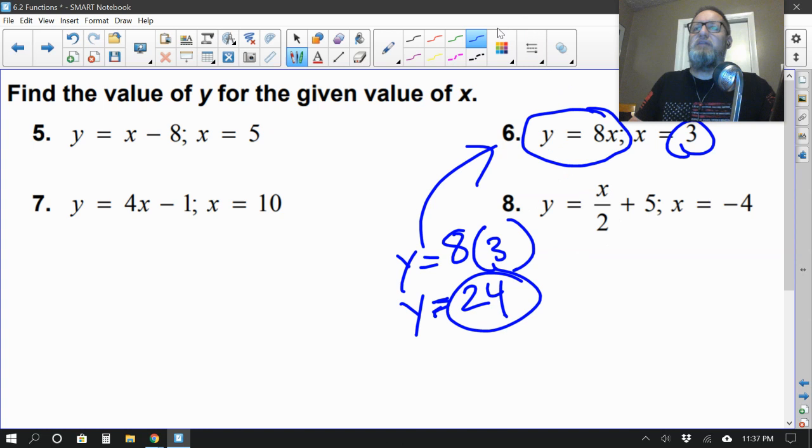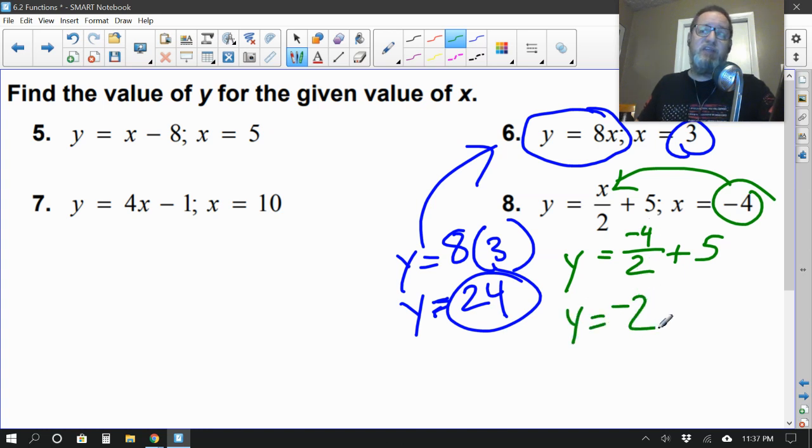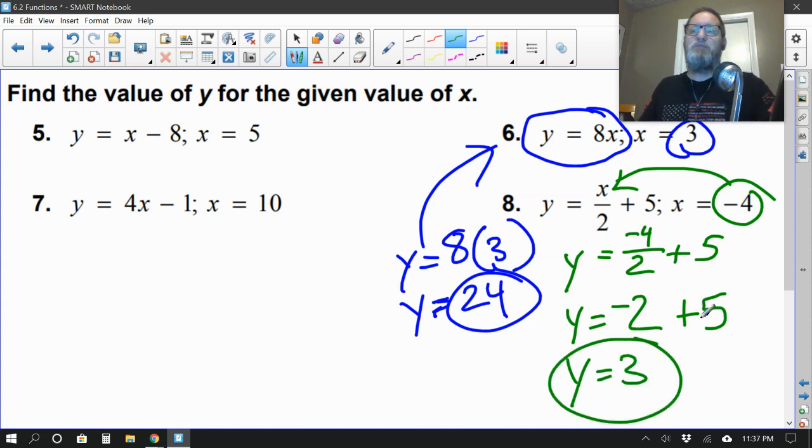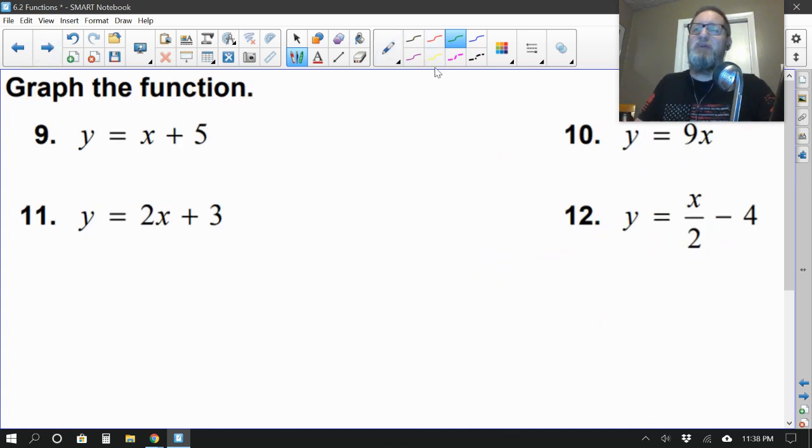All right. Number 8. How about I switch colors so we don't confuse these two problems? Now Y equals X over 2, which basically means X divided by 2 plus 5. So let's just plug in our value of negative 4 right here where the X is because it says X equals negative 4. So Y equals this negative 4 over 2 plus 5. Well, negative 4 divided by 2 is negative 2 plus 5 is 3. There we go. So number 8 is 3. And we're back to doing the evens again.